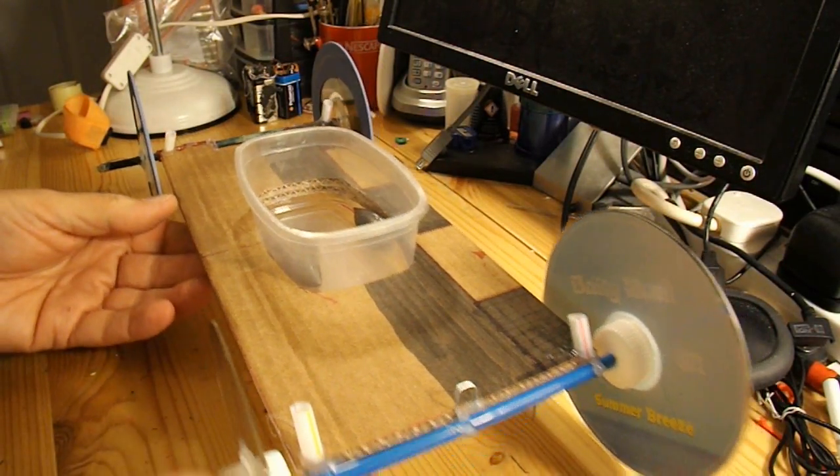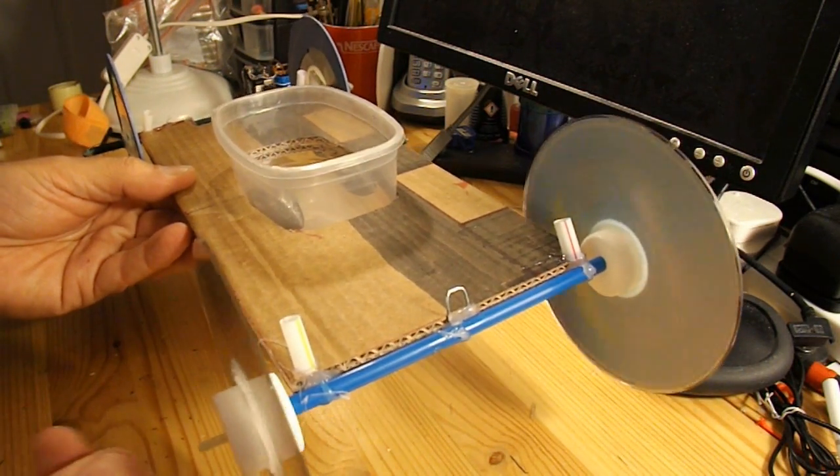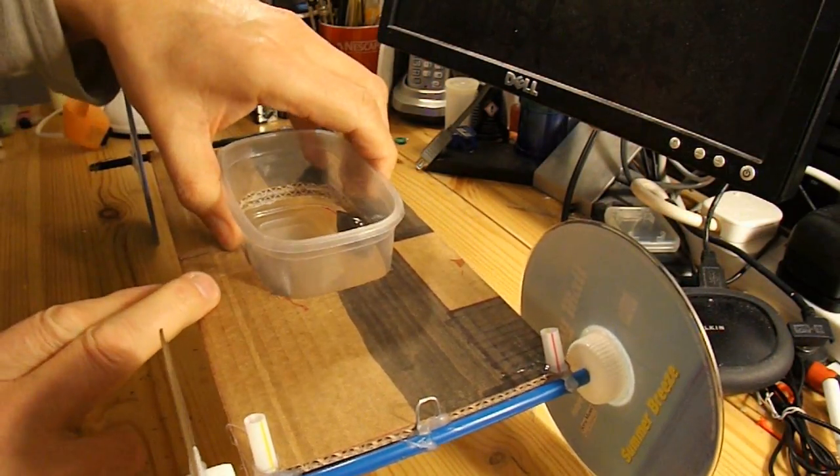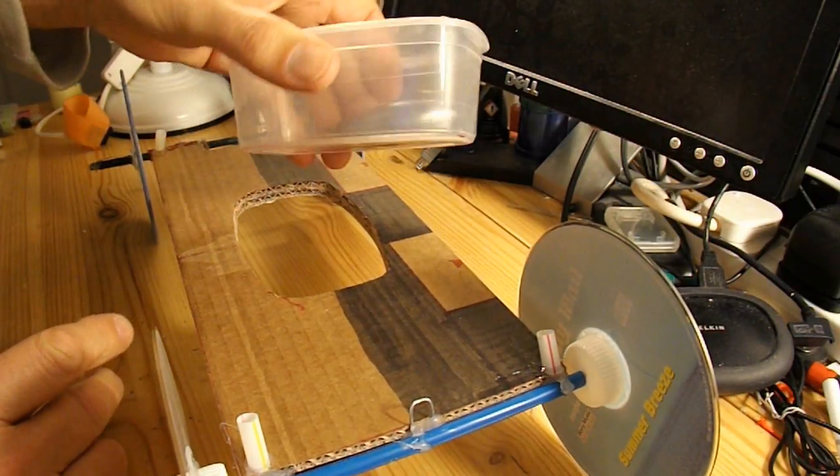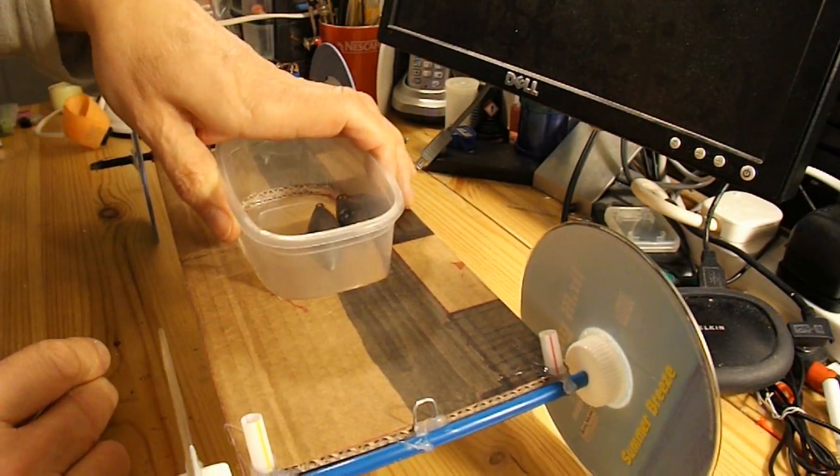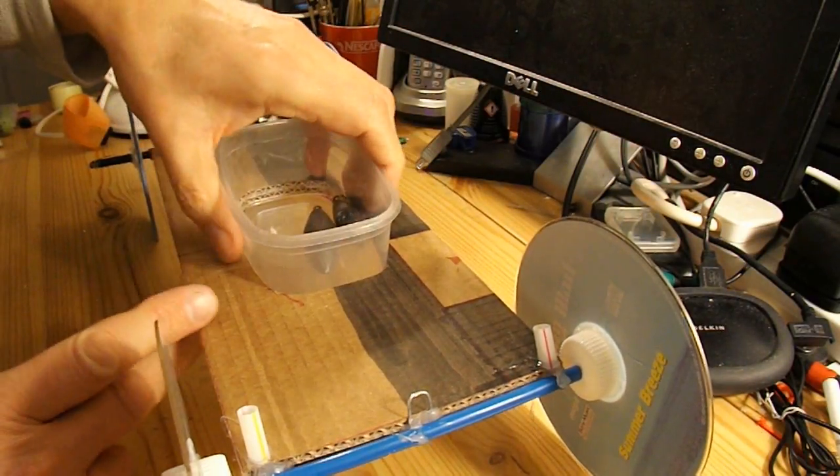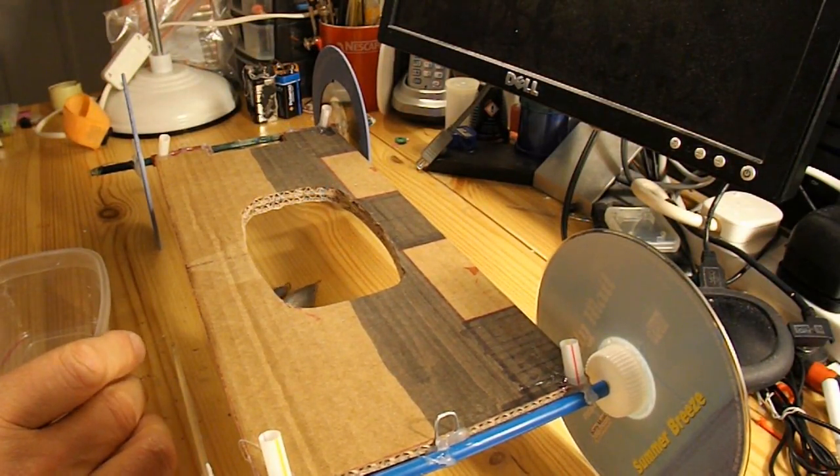Right, modified the bodywork. Barbecue skewers and CDs for the front wheel now. Cut a hole in the chassis. A little plastic tub. So we can either have the tub there to catch the weights, or we'll take the tub out and let the weights drop through.